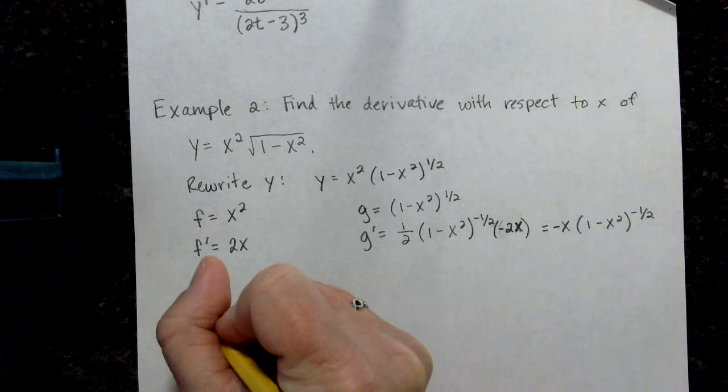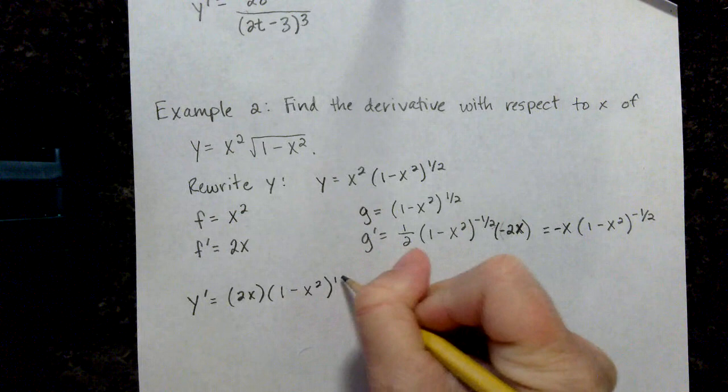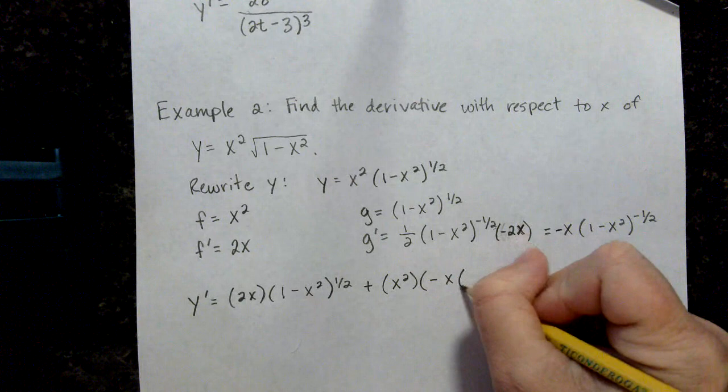Now we're just substituting in. My y prime is equal to my derivative of my first function times my second function plus my first function times the derivative of my second function.